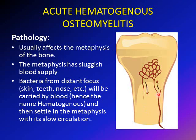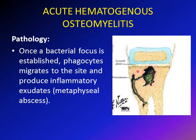Bacteria from a distant focus — such as an infection in the skin, teeth, or nose — travels through the blood and, because of the slow and sluggish blood flow in the metaphysis, settles there and forms an infection. That is why we call this hematogenous osteomyelitis. The bacteria settle, become surrounded by inflammatory cells, and ultimately form a metaphyseal abscess.